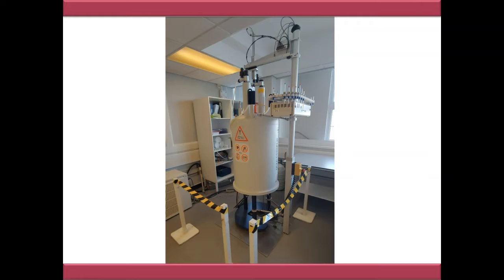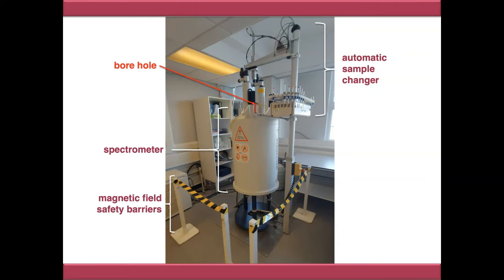So this is one of our NMR spectrometers here at Sheffield Hallam University and the main body of the spectrometer is here and this is what houses most of the workings but most interestingly the point on the top which you can see in red is called the borehole and that's where the sample gets dropped into the spectrometer. The samples are loaded from an automatic sample changer which is all of this apparatus at the top and you'll also notice on the floor that there are magnetic field safety barriers because the instrument generates a very strong magnetic field.